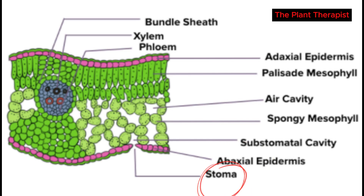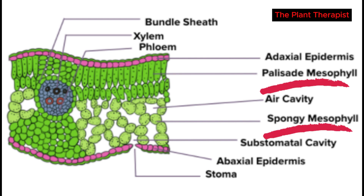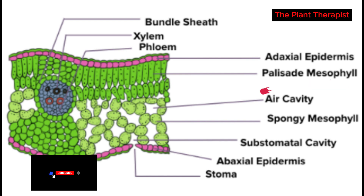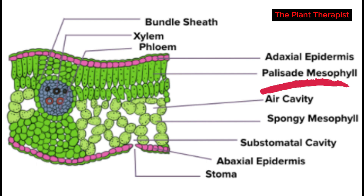Most photosynthesis takes place in the mesophyll, between the two epidermal layers, with two regions often being distinguishable. The uppermost mesophyll consists of compactly stacked, column-shaped parenchyma cells, often in two or more layers. This region is called the palisade mesophyll and may contain more than 80% of the leaf's chloroplasts. This dense arrangement maximizes the capturing of light hitting the upper leaf surface.